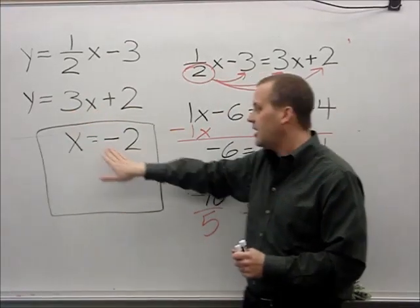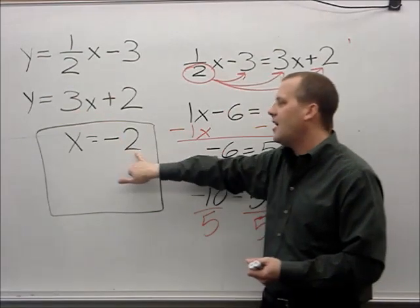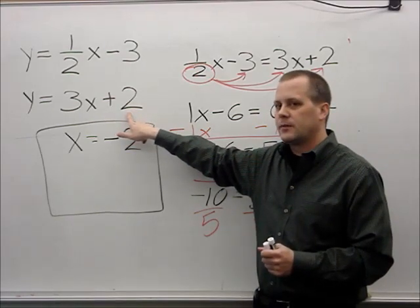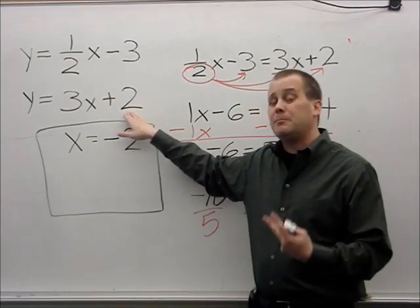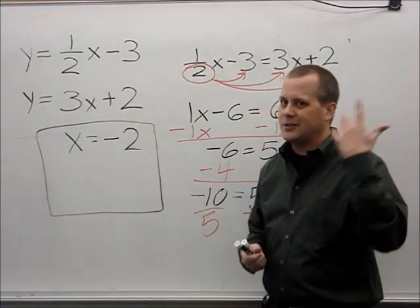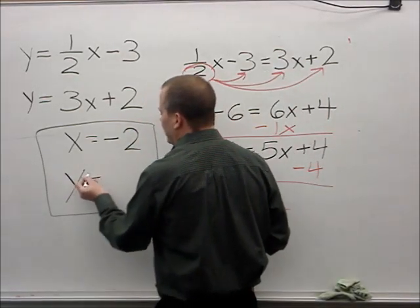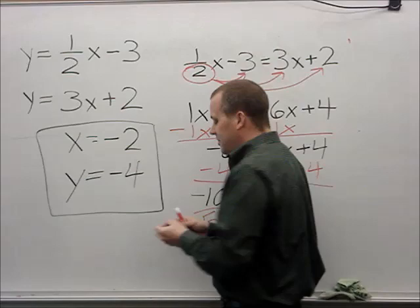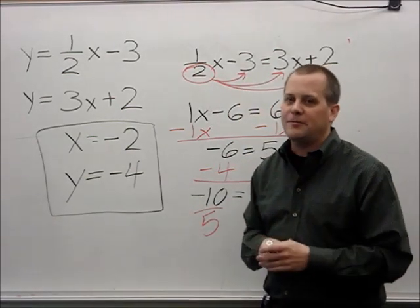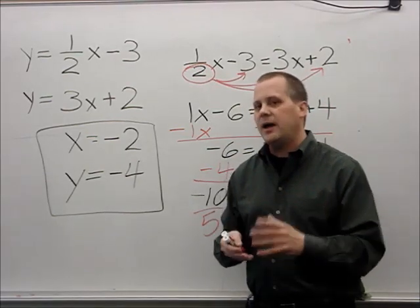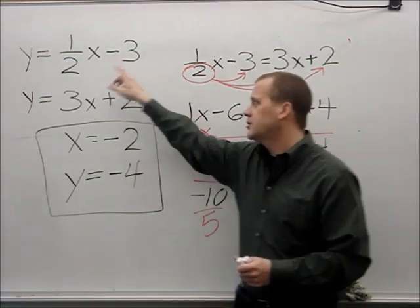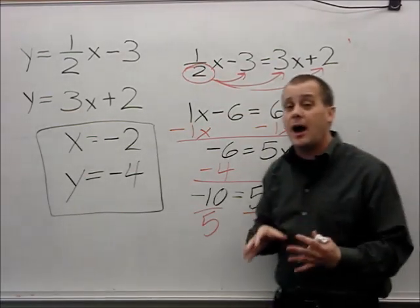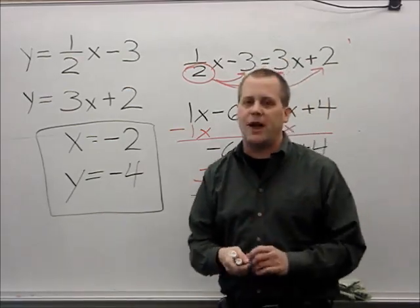I need to substitute x equals negative 2 into an equation. The first equation has a fraction, so I'll use the second equation instead: y equals 3 times negative 2 plus 2. 3 times negative 2 is negative 6, and negative 6 plus 2 is negative 4. So the point of intersection is (negative 2, negative 4) — that's where those two lines will cross when graphed. Remember: this denominator trick works only when you have one fraction.